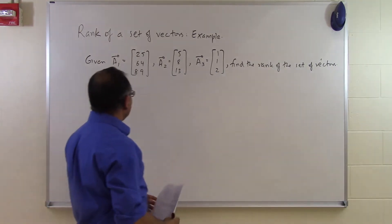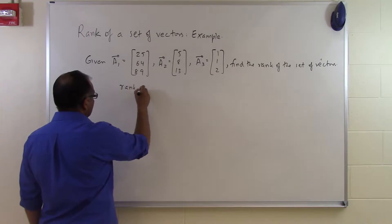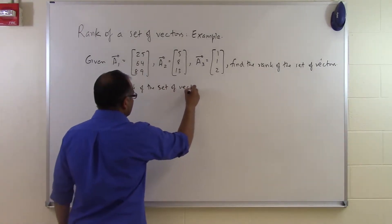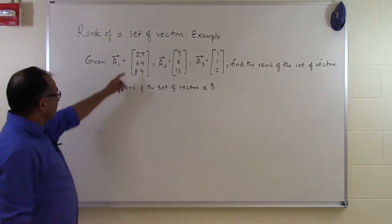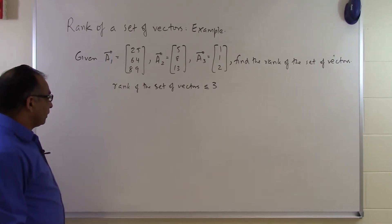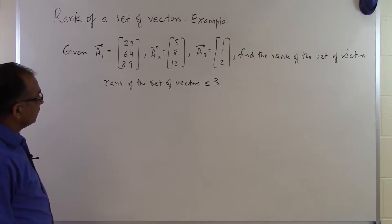The first thing which we know is that the rank of the set of vectors is going to be less than or equal to 3 because the dimension of the vectors is 3. It can only be less than or equal to 3. Let's see what that number is.